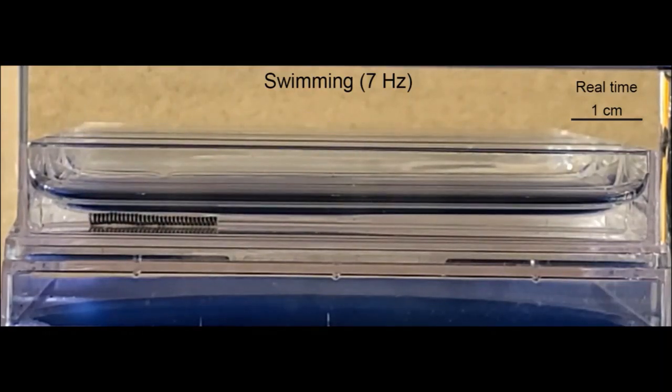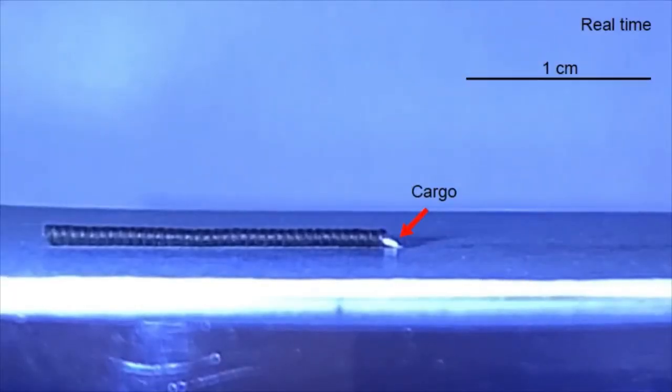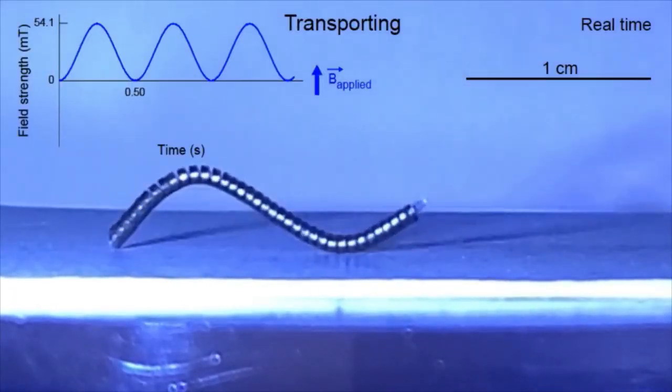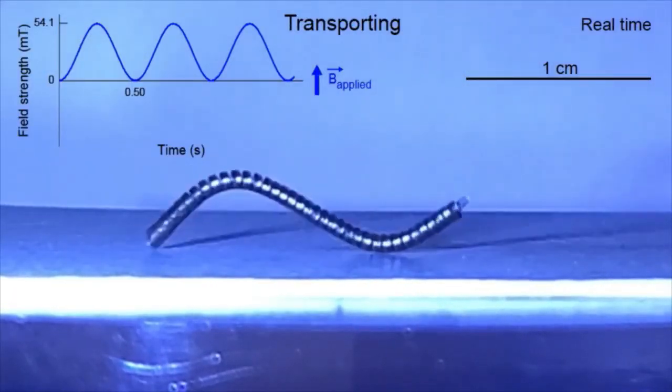When the field is reduced to zero, the compression is released, and the crawling robot stretches. Together, these movements propel the robot forward.